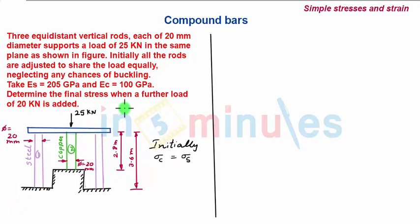So in this problem, we have been asked to find out the final stresses when an additional load of 20kN is added on the system. So we have to find final stresses in copper rod and steel rod when load of extra 20kN is added.